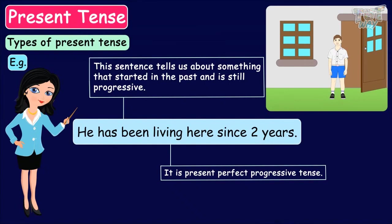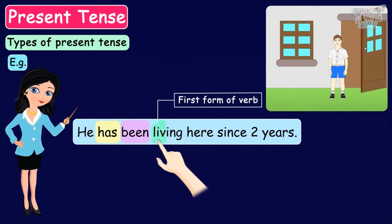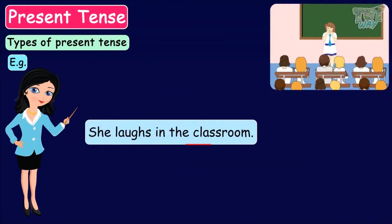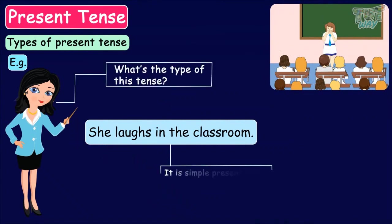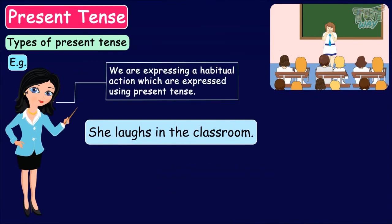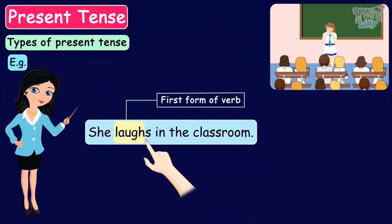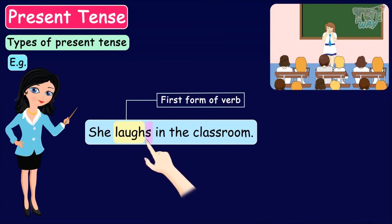'She laughs in the classroom.' What type of tense is this? Simple present tense. We are expressing a habitual action, and we use the first form of the verb laugh along with s. So here we have the first form laugh along with s.